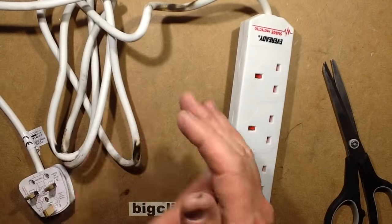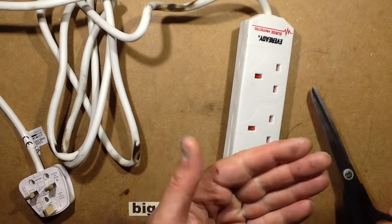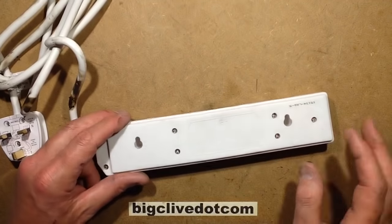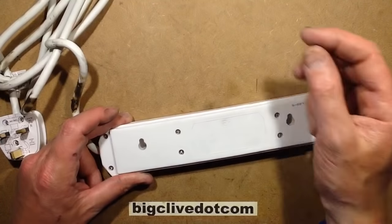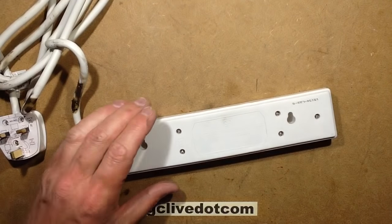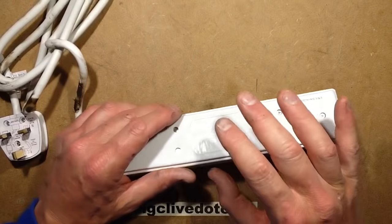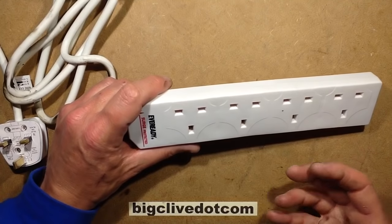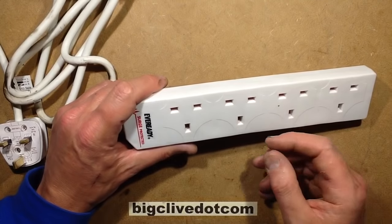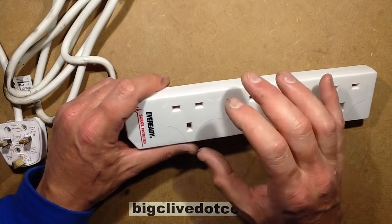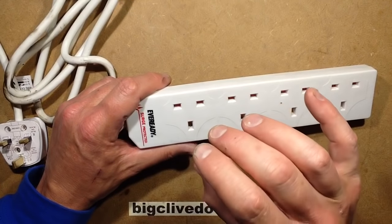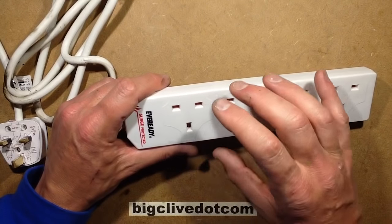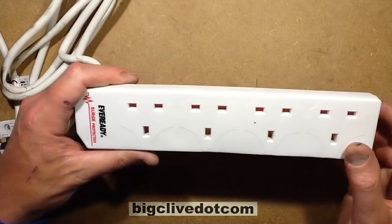But anyway, let's take a look inside because this is a surge protected strip. And I'm guessing that all they've done inside this is they've probably added a metal oxide varistor, which is a resistor that has a high resistance at normal mains voltage. But as soon as it exceeds a threshold above that, it actually shorts out briefly and clips that down. It lowers in resistance and absorbs any sharp transients.